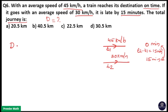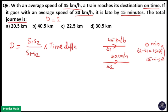Distance is equal to Speed 1 times Speed 2, divided by the difference in speed, multiplied by the time difference. That is, distance equals speed into time — just rewriting this formula as: speed equals S1 times S2 divided by S1 minus S2, and time equals the time difference.